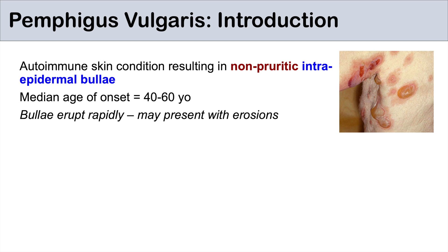With pemphigus vulgaris, the bullae themselves erupt rapidly, so they may present with erosion. These bullae form but they're very weak — they're very flaccid. They can just pop and ooze out their contents and look like erosions after time, such as here in this picture.